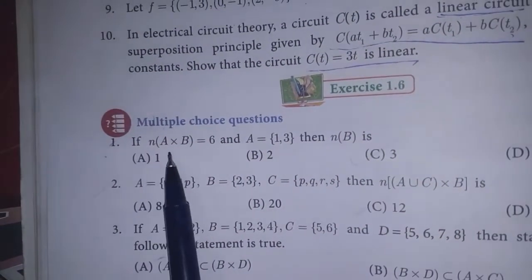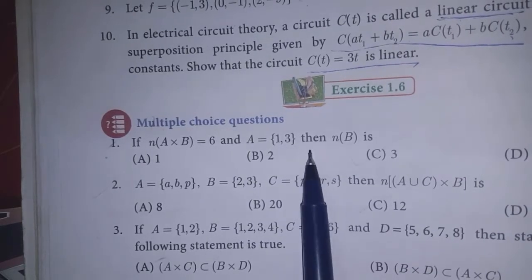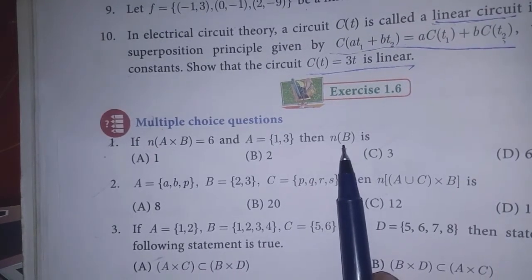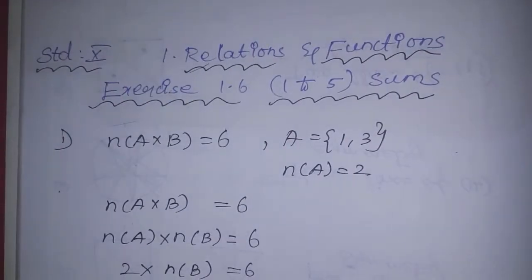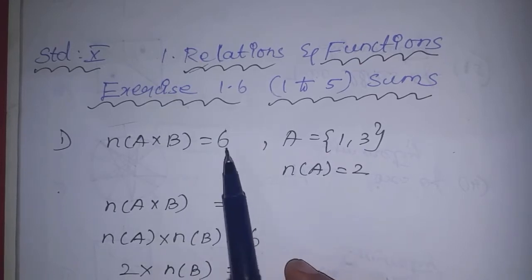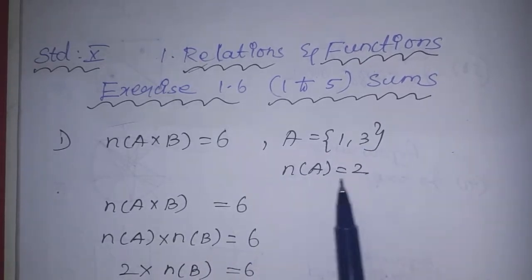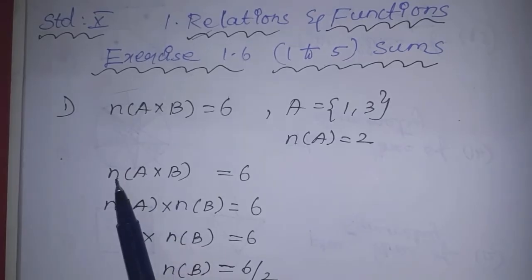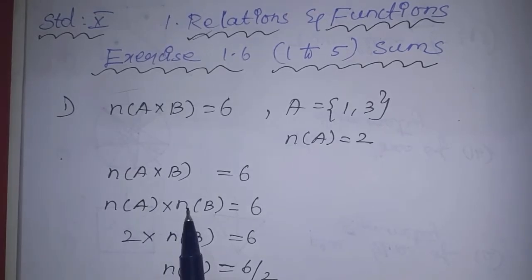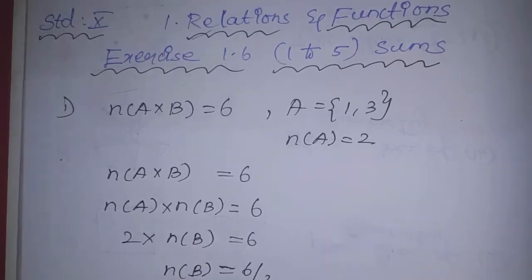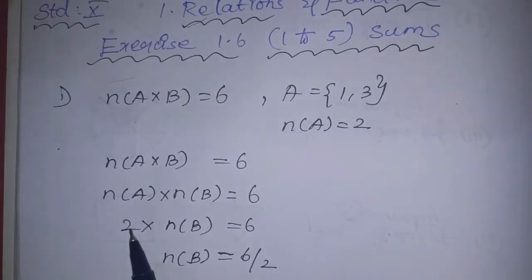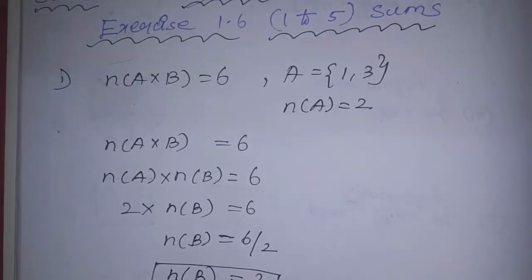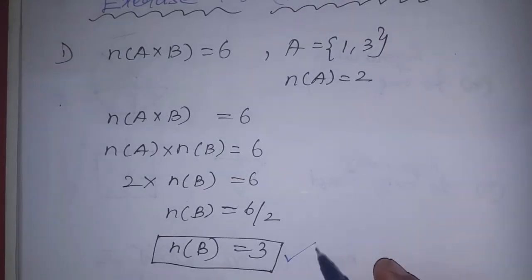First sum: if n(A×B) is equal to 6 and A is equal to {1, 3}, then n(B) is dash. A×B is a set. Now, A is equal to {1, 3}, so number of A is equal to 2. The formula is: n(A×B) = n(A) × n(B). So 2 × n(B) = 6, which means n(B) = 6 ÷ 2 = 3. The answer is 3.